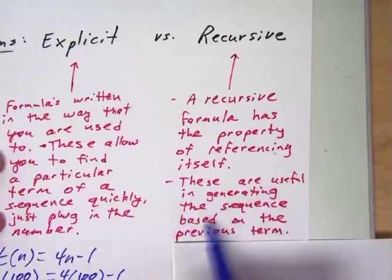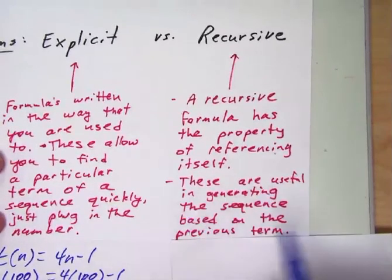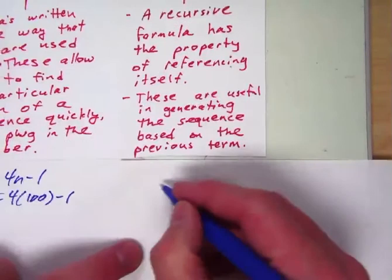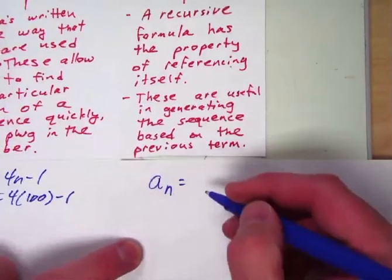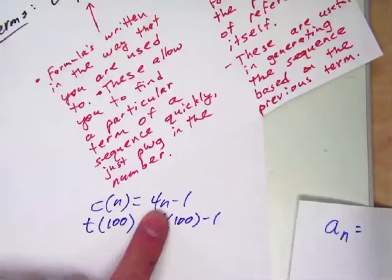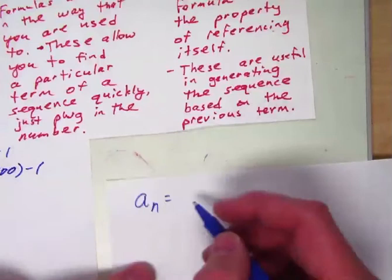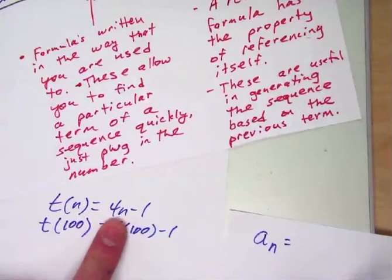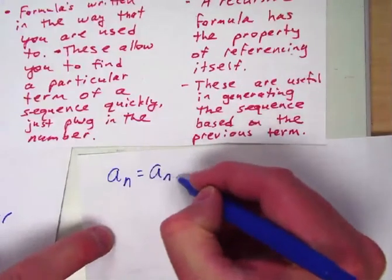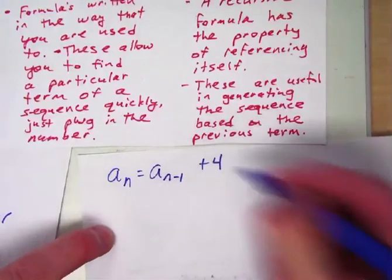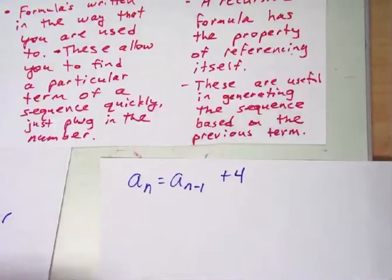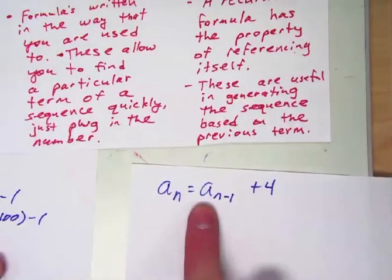These are useful when generating the sequence based on the previous term. So what they typically look like is a sub n equals and in this case we had 4n minus 1. So this is changing by 4 every time. So then it would be the previous term plus 4. I will explain that in detail here in the following parts of this video.